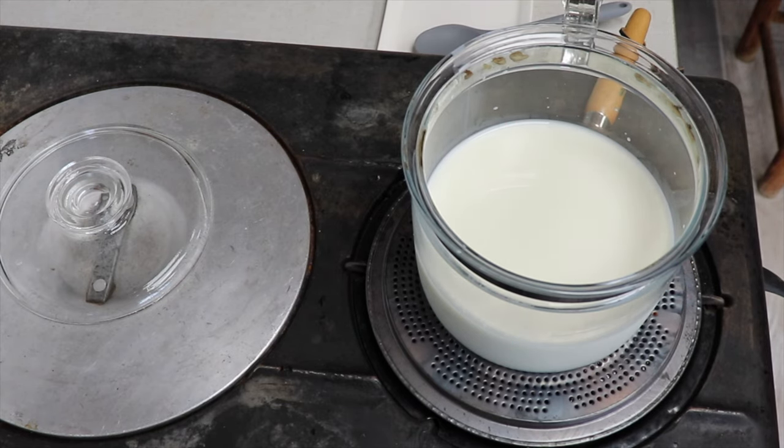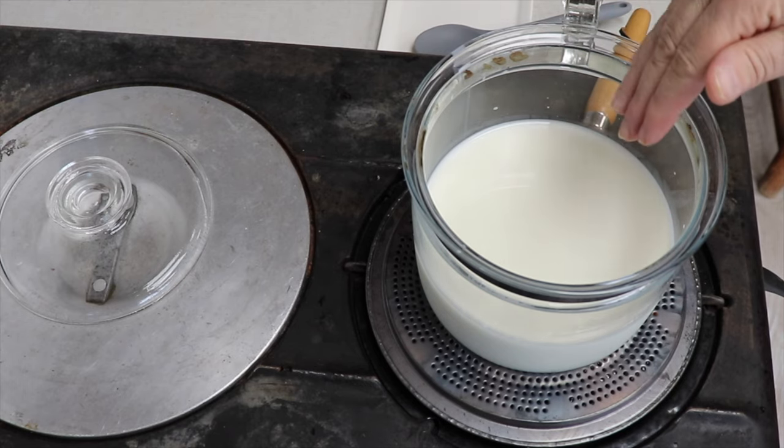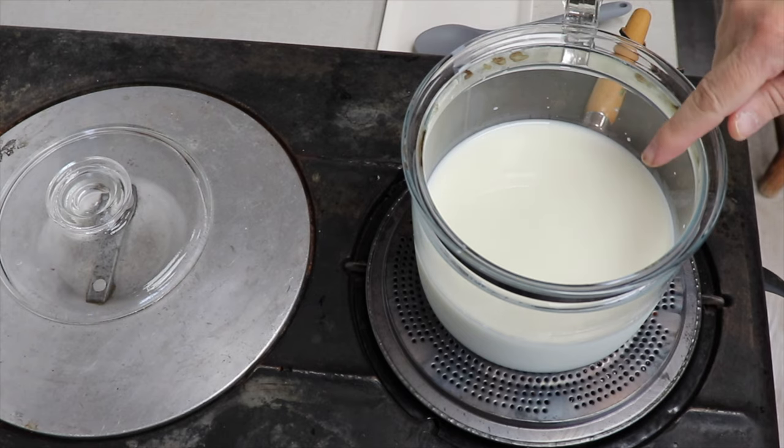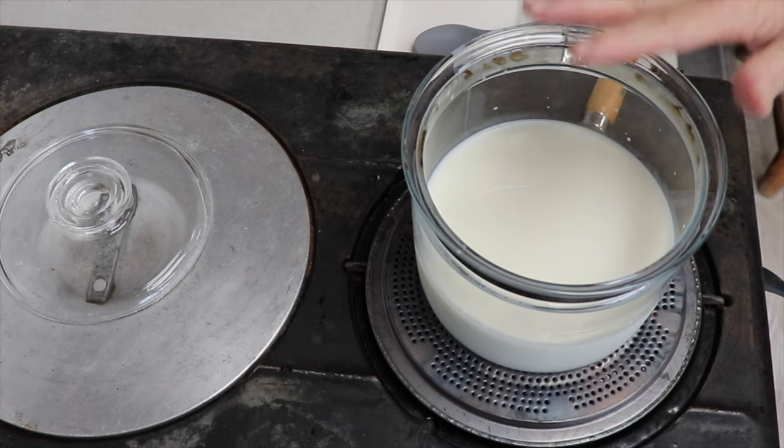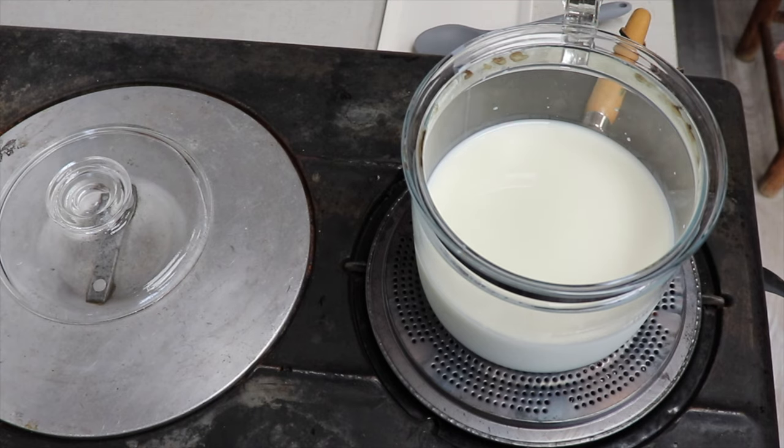As soon as we hit 180 in temperature, we're going to immediately pull it off the heat. Then we'll add our fresh squeezed lemon juice and give it a gentle stir. Then we'll immediately add the vinegar and give it a stir. Then we cover it with the lid or a flour sack towel, and that will sit off the heat for 30 minutes. And then we're going to drain it for about an hour. It's as easy as one, two, three. A very simple cheese.